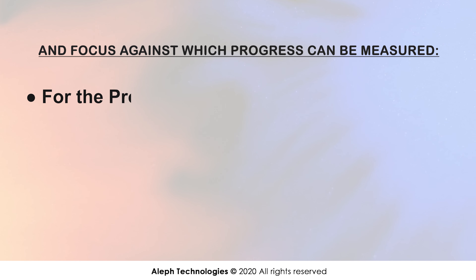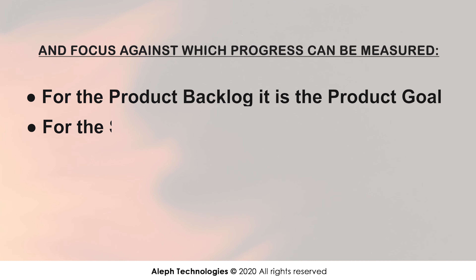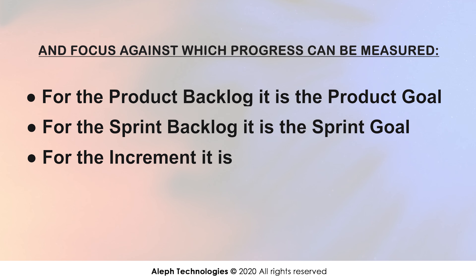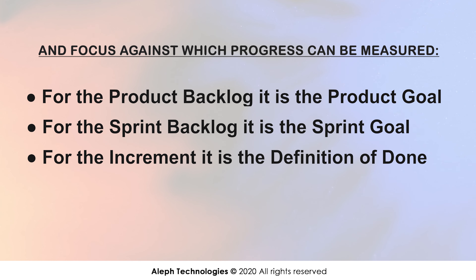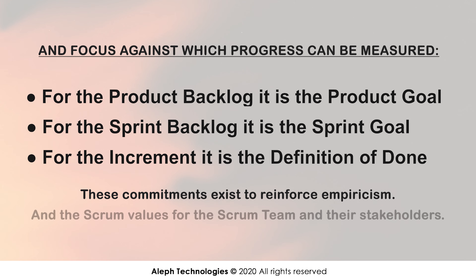For the product backlog, the commitment is the product goal. For the sprint backlog, it is the sprint goal. For the increment, it is the definition of done. These commitments exist to reinforce empiricism and the Scrum values for the Scrum team and their stakeholders.